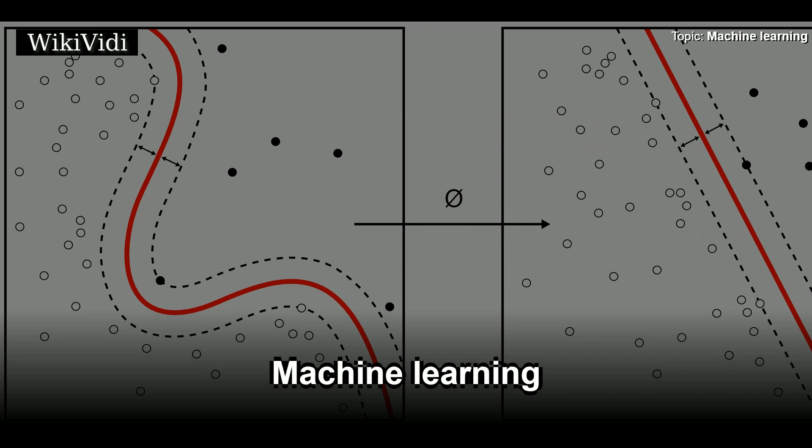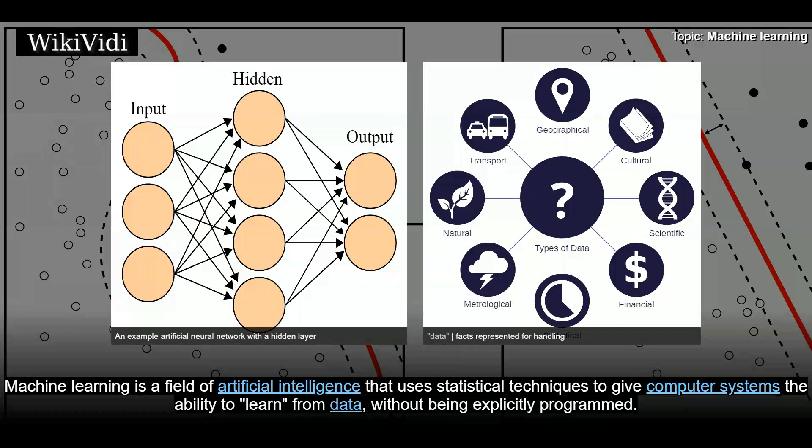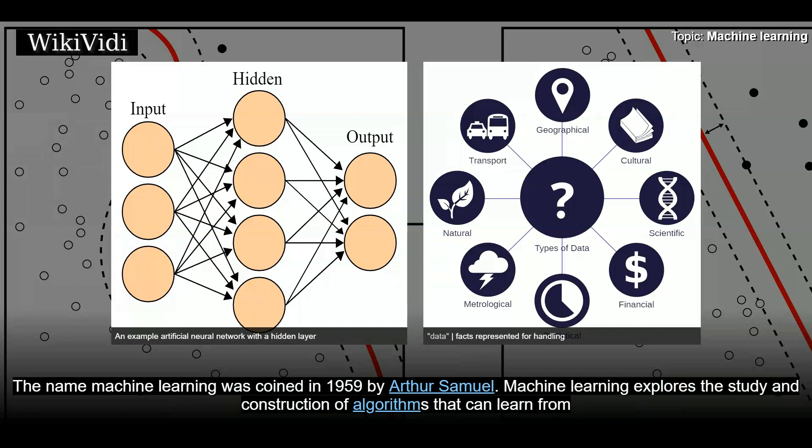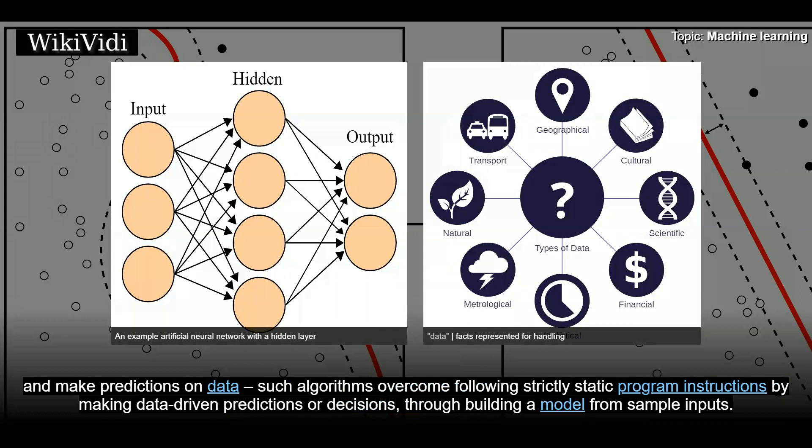Machine Learning is a field of artificial intelligence that uses statistical techniques to give computer systems the ability to learn from data without being explicitly programmed. Machine Learning explores the study and construction of algorithms that can learn from and make predictions on data, such algorithms overcome following strictly static program instructions by making data-driven predictions or decisions through building a model from sample inputs.